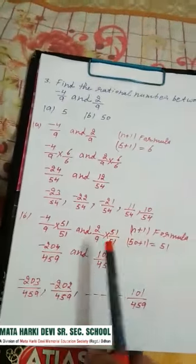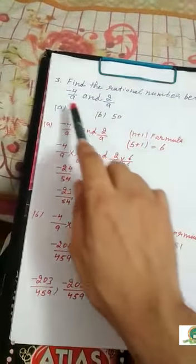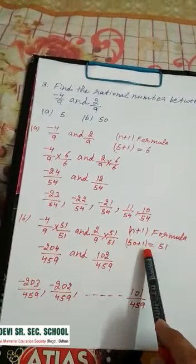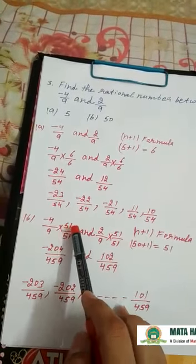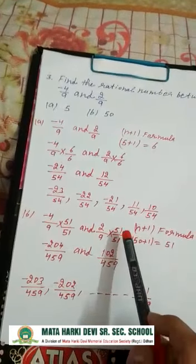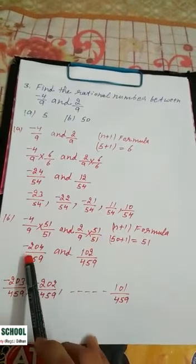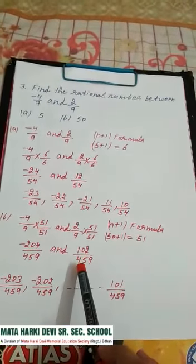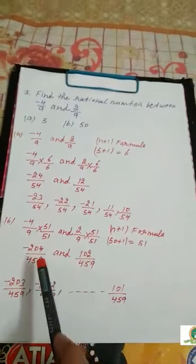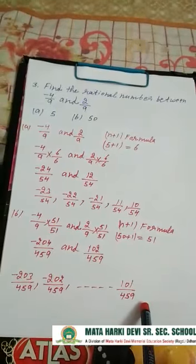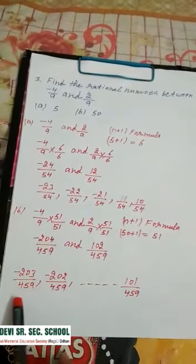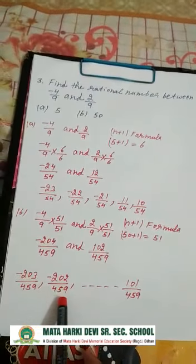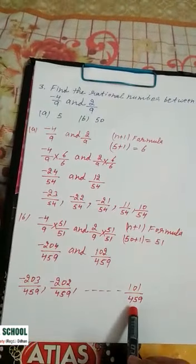For part B, finding 50 rational numbers between minus 4 by 9 and 2 by 9. Use the n plus 1 formula: 50 plus 1 is equal to 51. Multiply 51 to numerator and denominator on both sides. So 51 times 4 is 204, 51 times 9 is 459. And 51 times 2 is 102, 51 times 9 is 459. Between minus 204 by 459 and 102 by 459, you can write any 50 rational numbers — starting from minus 203 by 459, minus 202 by 459, and so on up to 101 by 459.